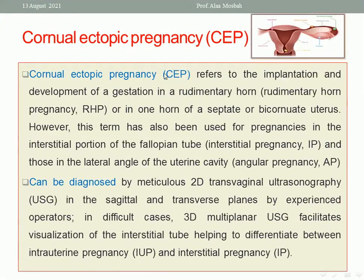Cornual ectopic pregnancy includes implantation in a rudimentary horn, one horn of a septate or bicornuate uterus, the interstitial portion of the fallopian tube, or the lateral angle of the triangular uterine cavity — also called angular pregnancy. Diagnosis can be made with 2D transvaginal ultrasound, but 3D multiplanar ultrasound is better to differentiate intracornual from interstitial pregnancy.